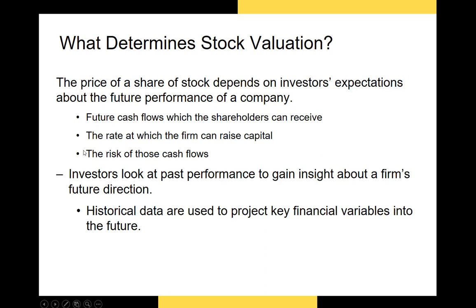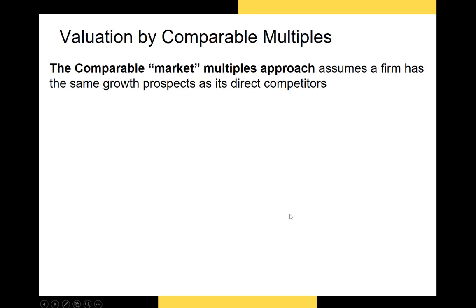The third component to take into account is the risk of those free cash flows. The problem is that those cash flows aren't guaranteed — they can fluctuate through time, so we expect a fair amount of risk associated with them. To estimate future free cash flows and the discount rate, we tend to look at the past performance of the firm and use that to determine expected future cash flows, using both historical and forecasted data.